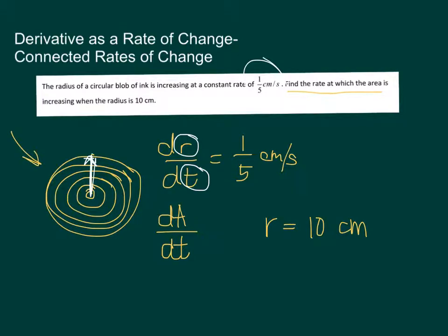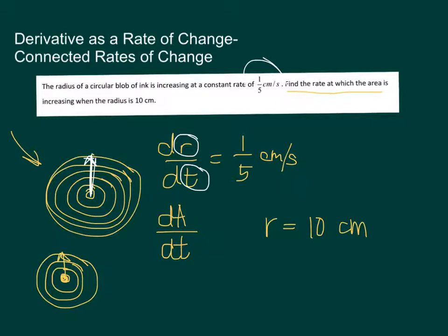Going back to our illustration, the blob of ink started with a small circle and it is scattering. As the circular area is increasing, so is the radius. We want to find how fast the area is changing at the moment when the radius is already 10 centimeters.